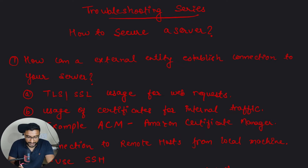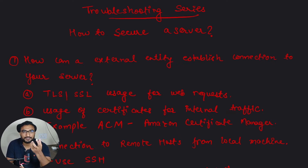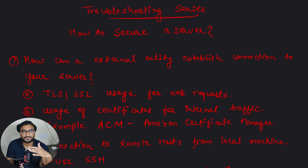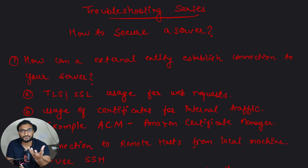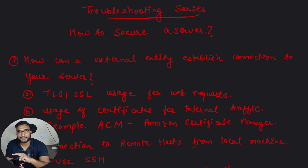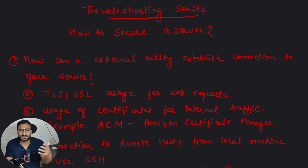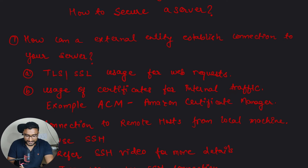First, think about how an actual entity establishes a connection to your server. When you want to make your server secure, you want to make sure that any unrequired entity is not accessing it. The basic definition of secure is that a resource is only accessible to the person it is intended for — like a Facebook account where only the correct credentials grant access.